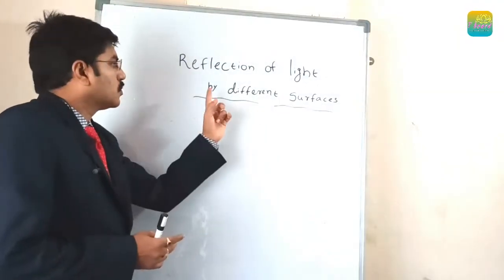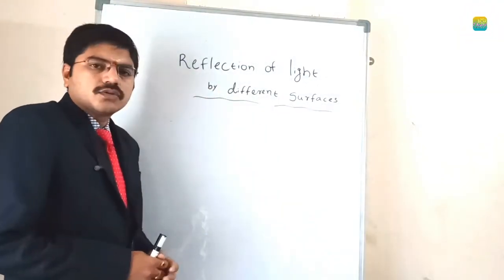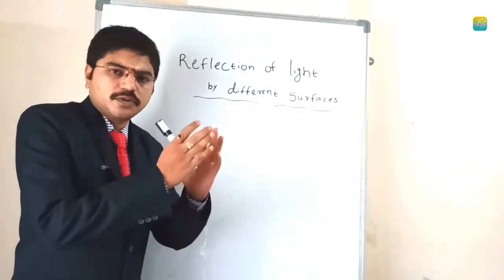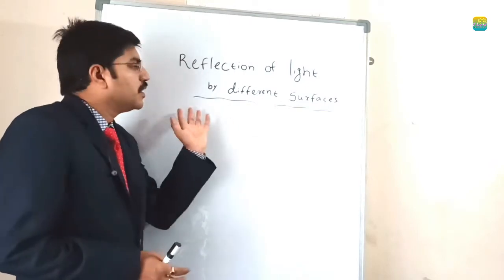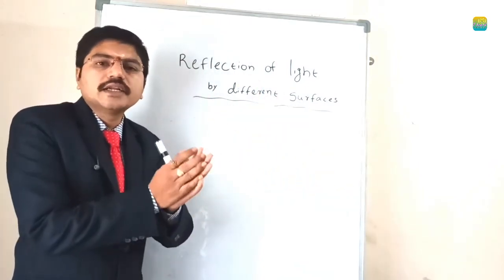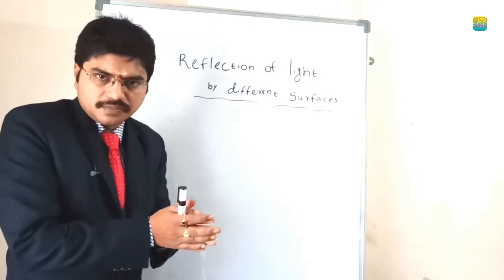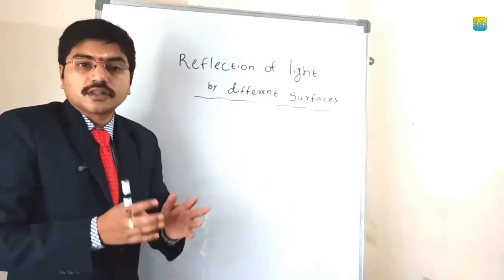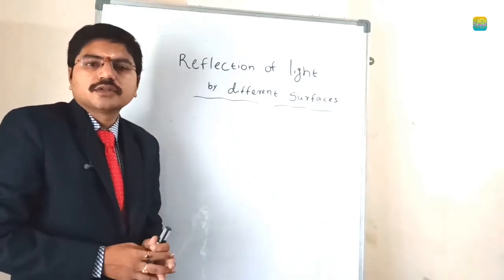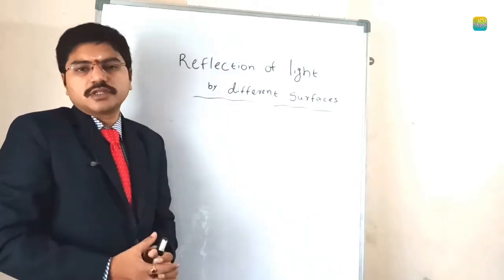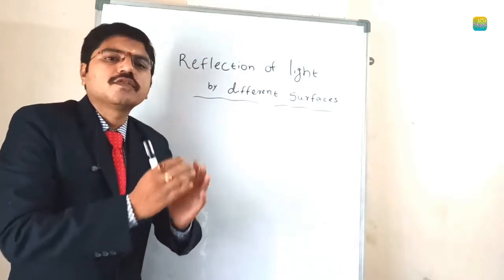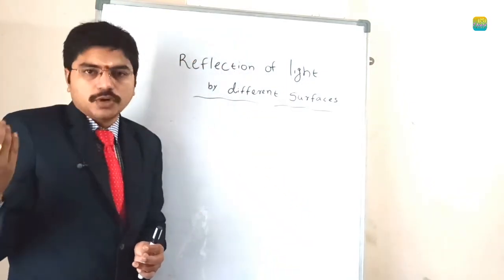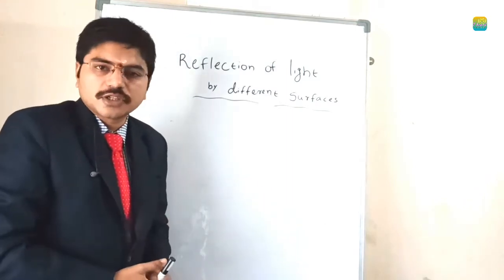Reflection of light by different surfaces. We already know that different types of surfaces are there in our daily life, and we see different types of reflections. If any ray of light falls on a particular object, it will reflect or refract. The reflection is nothing but the bouncing of light when it falls on a particular object. The bouncing of light is said to be reflection of light.